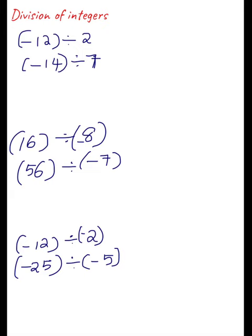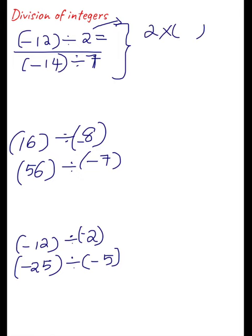First let's see the division of a negative integer by a positive integer. That is negative integer -12 divided by positive integer 2. How will you find the answer? Division means you are going to divide 12 by 2, that means you need to find the number by which, when multiplied with 2, you will get the answer as -12. That is the meaning of division.